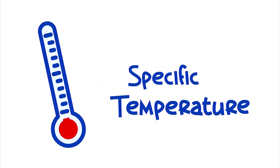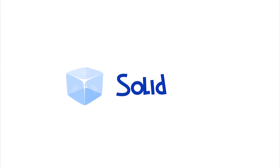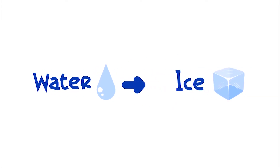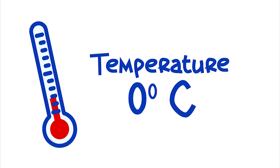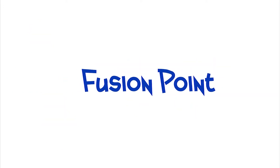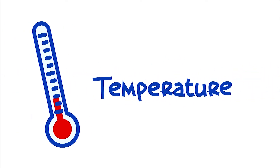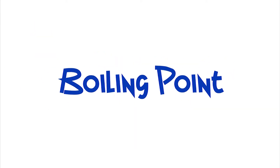Which means any specific temperature changes the state of matter of a solid, liquid, or gaseous substance. The water, for example — for it to turn to ice, it must be at the temperature of zero degrees Celsius. This temperature is then the fusion point of the water. For the water to turn into gas, it must be at the temperature of 100 degrees Celsius. And this temperature is the boiling point of the water.